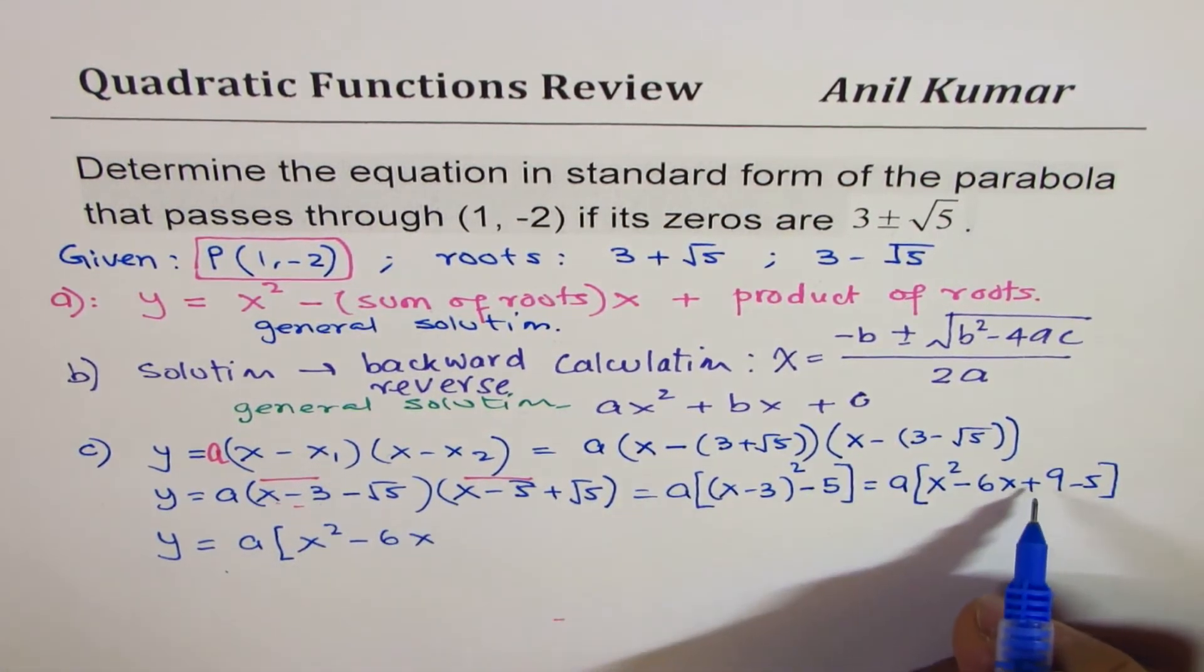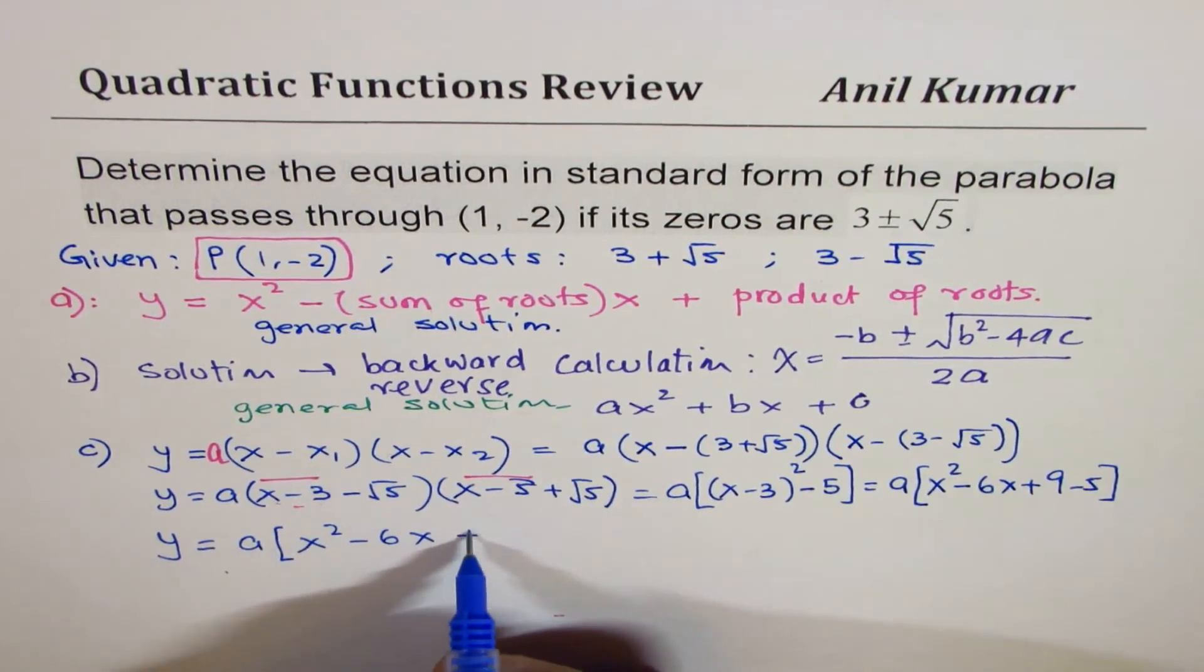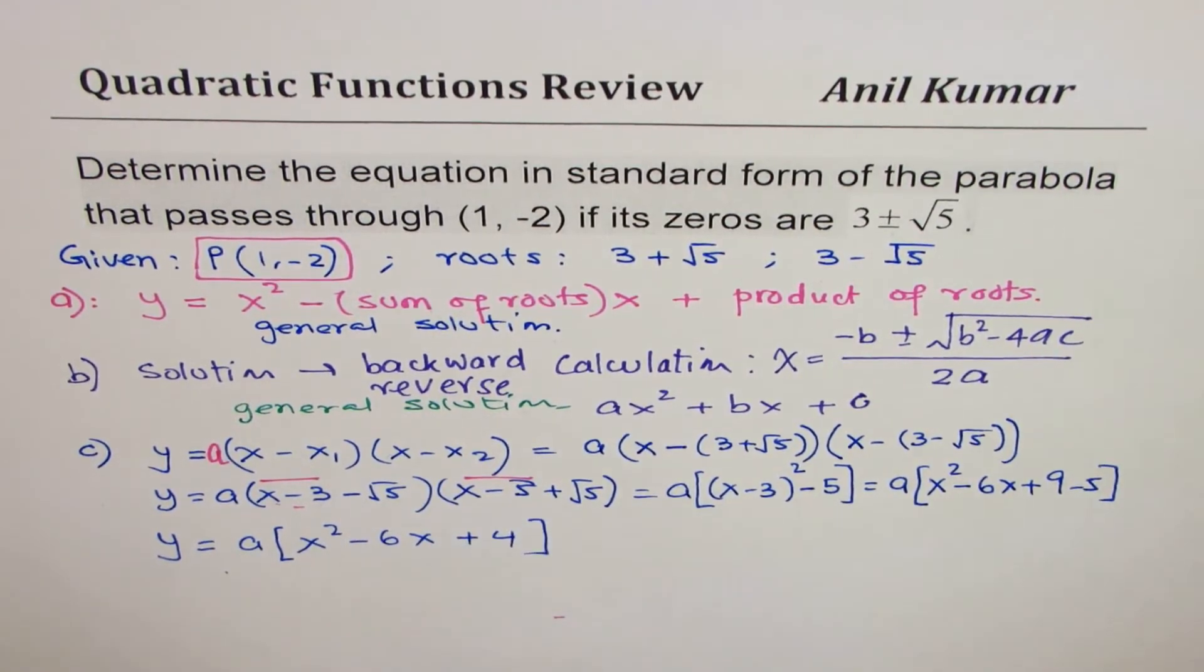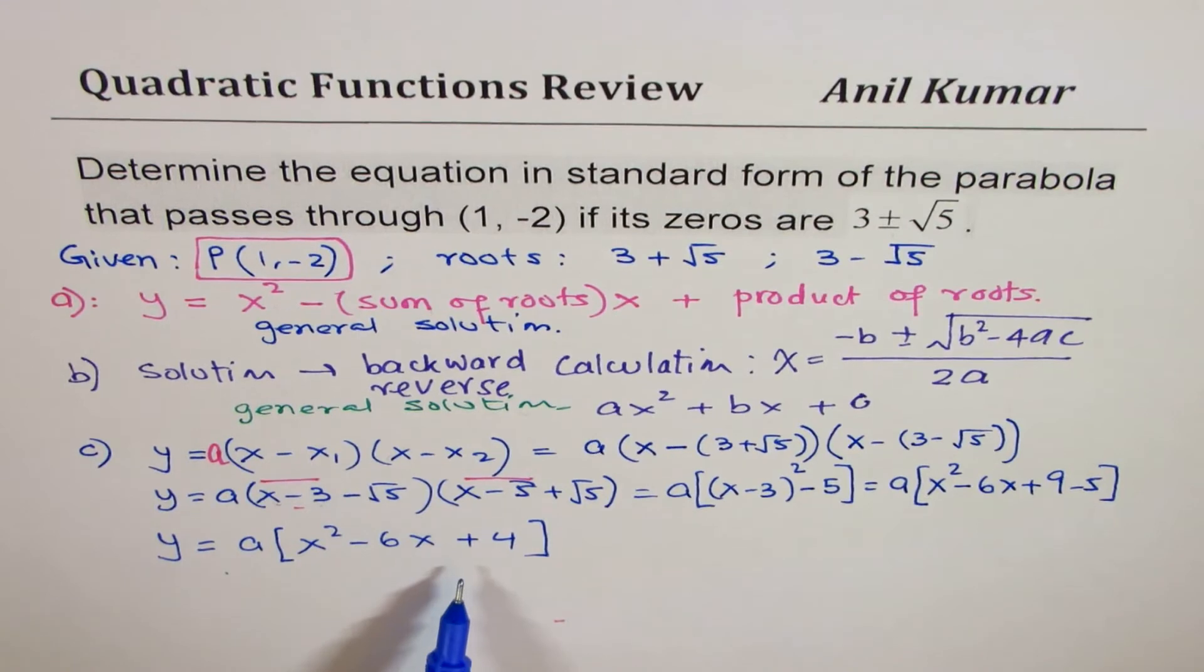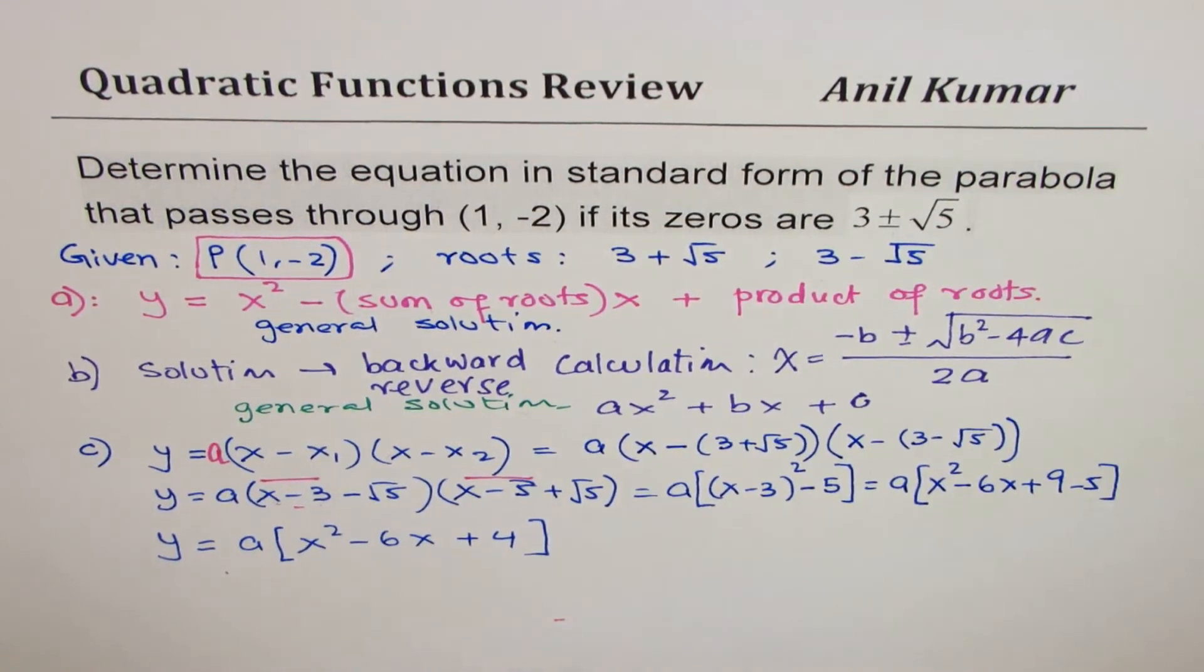We get your equation: this is in standard form now. At this stage we can use the point P which is (1, -2) to get the value of a.